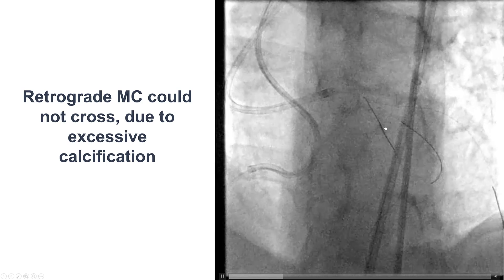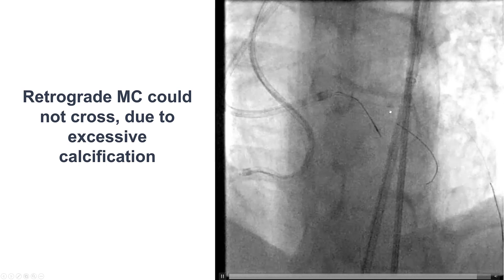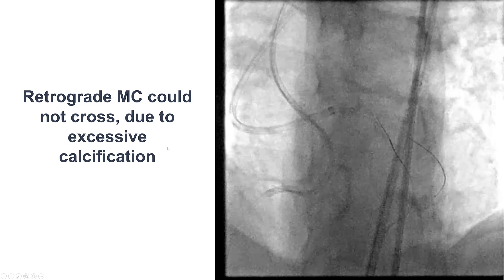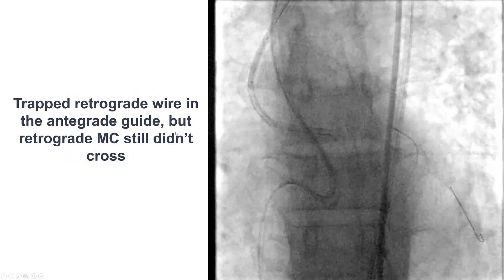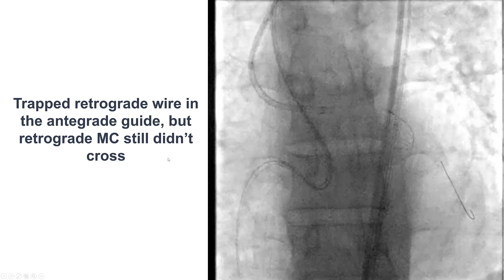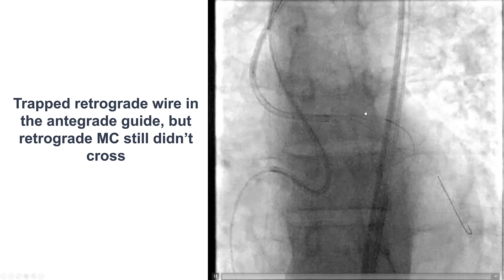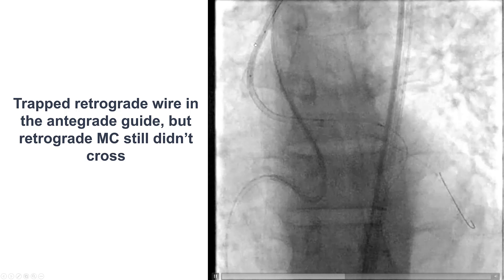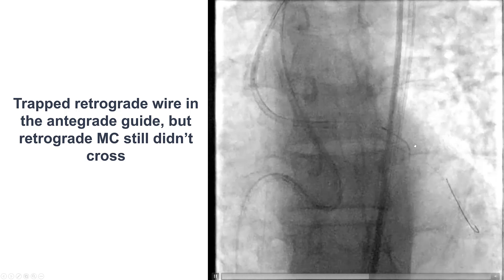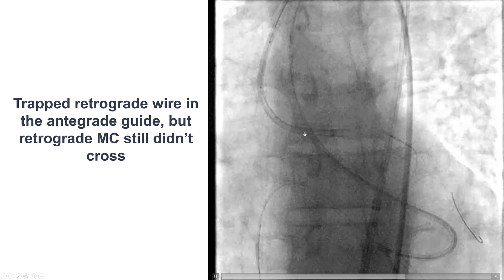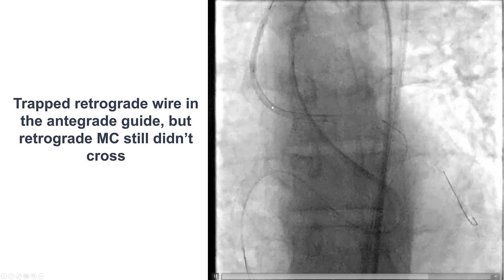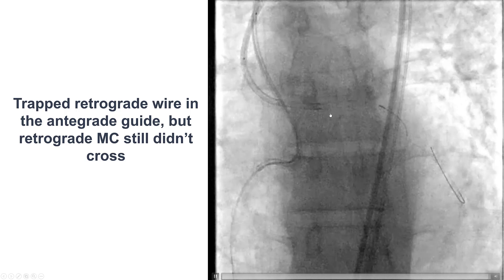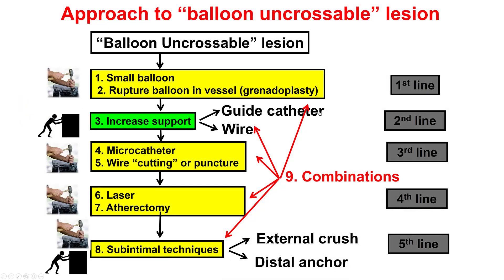Unfortunately, the retrograde microcatheter could not cross more proximally, which would have been our preferred strategy — to switch the stiff wire for a softer one and advance it into the guide catheter. We were able to advance the retrograde Warrior into the antegrade guide catheter and inflate a balloon next to it to increase support, then deliver the retrograde microcatheter into the antegrade guide catheter. However, there was so much resistance that we were unable to advance it.